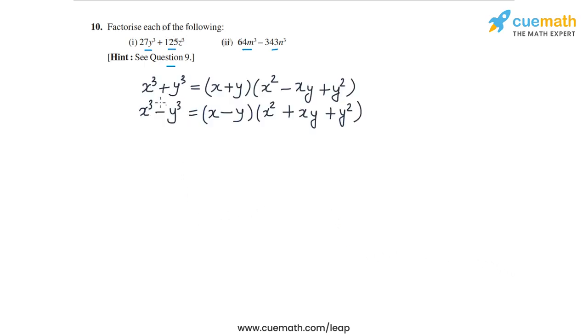These are the two identities we had proven in the last question: x³ + y³ = (x + y)(x² - xy + y²) and x³ - y³ = (x - y)(x² + xy + y²). This is what we're going to use for this question.